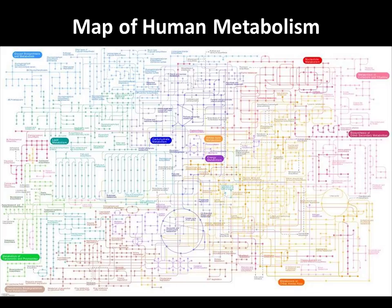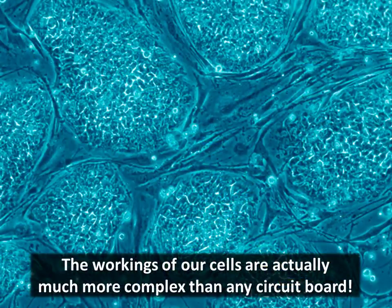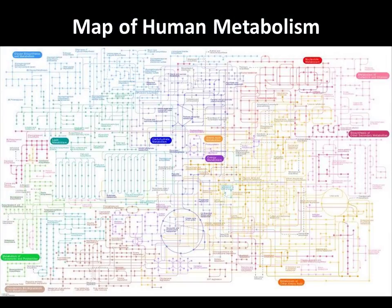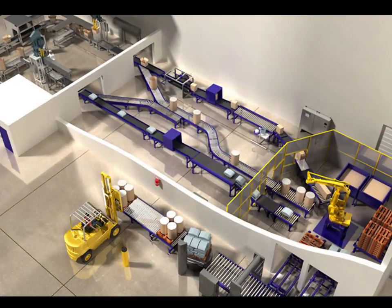This map of human metabolism was created by scientists to summarize what actually happens in our body's cells. This map looks very similar to a circuit board, and some of the same principles apply. But the workings of our cells are actually much more complex than any circuit board. In fact, each cell is a tiny factory that takes raw materials and produces what our bodies need to function. Each connecting pathway on this map actually represents a tiny assembly line within the factory. We'll zoom in to a small part of the factory to take a closer look at how vitamins and minerals are used.